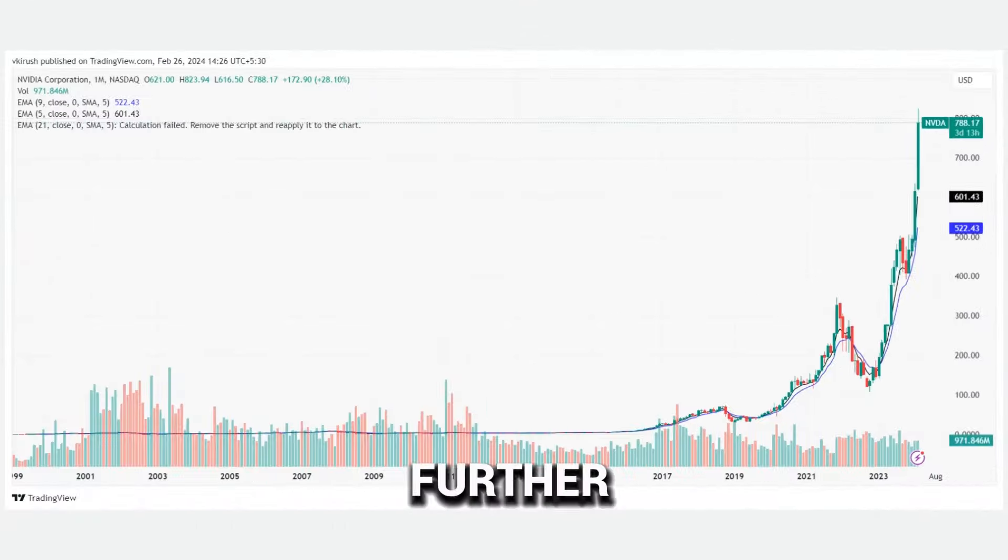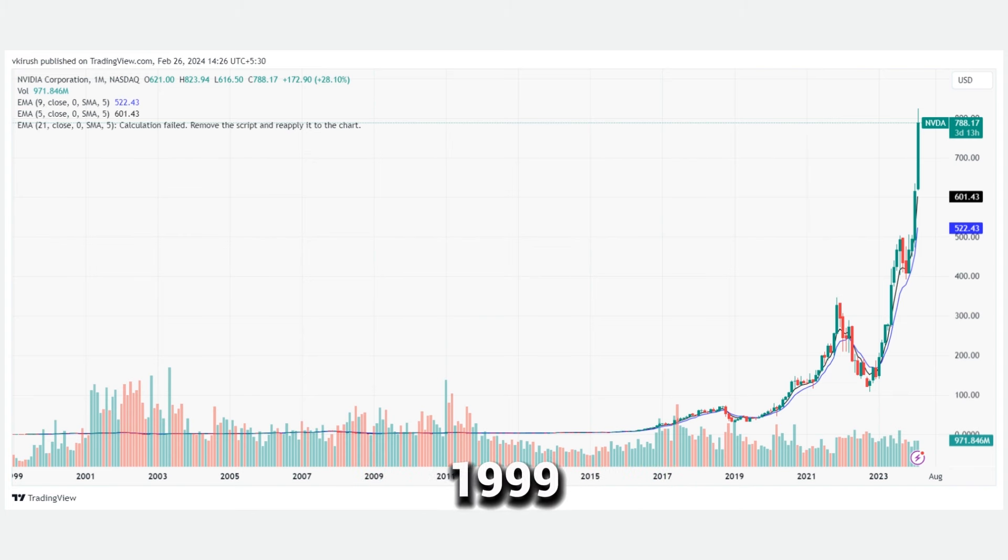To stretch our imagination further, if someone had invested right when NVIDIA went public back on the 22nd of January, 1999, with just $1,000, they'd potentially sit atop an immense fortune estimated at close to $2 million today.